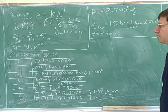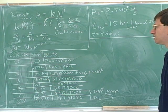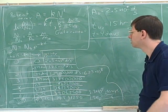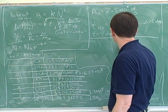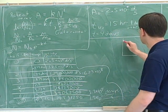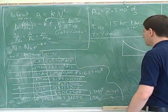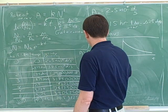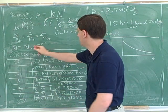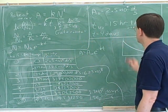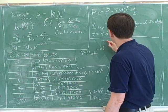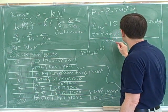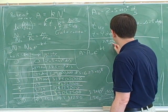Good. For A, we'll use A sub-zero times e to the negative KT. But first we need to find K. You can go from here and use a similar equation: K equals ln(2) divided by 0.6.